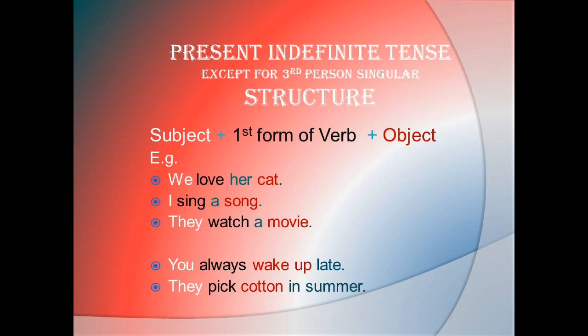To write a sentence in present indefinite tense, a structure should be followed, which is: Subject plus first form of verb plus object. This structure is only used for first person singular, second person singular, third person plural, second person plural, and first person plural. It means this structure is not used for third person singular.